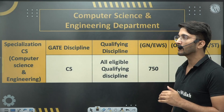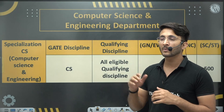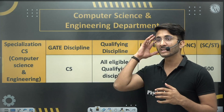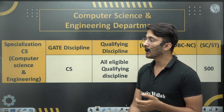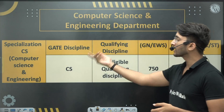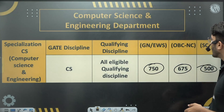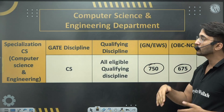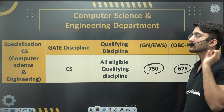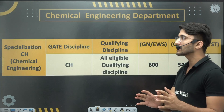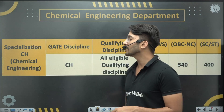Many students targeting IIT Bombay are from Computer Science, as IIT Bombay placements are excellent and good packages are expected. For CS M.Tech, you need at least 750 for General, 675 for OBC-NCL, and 500 for SC/ST. After clearing the cutoff, a written test or interview may also be required. It is advisable to target 800+ if aiming for top IITs.